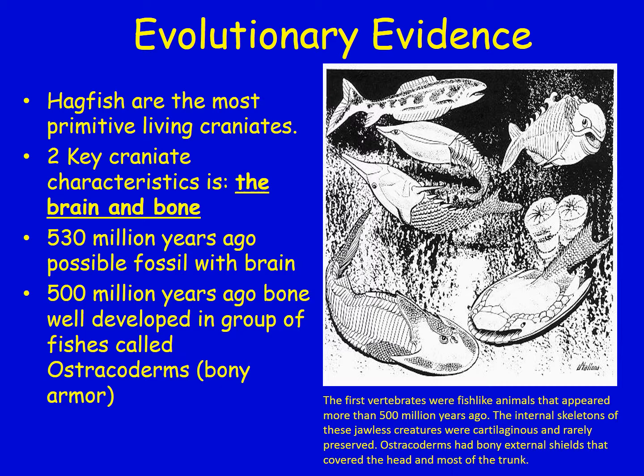A little history on fish and how they evolved: hagfish are the most primitive living craniates. The two craniate characteristics they have are the brain and bone. Looking at the fossil record, scientists found a fossil from 530 million years ago that possibly had a brain, and then about 500 million years ago they found bone in a group of fish called ostracoderms — 'ostra' relates to bone and 'derm' relates to skin, so they had a kind of bony armor.